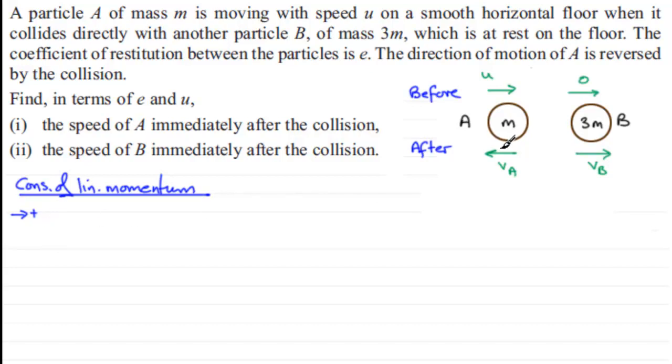So, what we've got is the momentum before impact. So, it's just going to be for A, m times u. So, we've got mu. There's no momentum initially for B. So, this is equal to the momentum after impact. So for A, we've got the mass m, multiplied by the velocity, which is going to be negative VA, because it's going in the opposite sense to this. So, we've got m times minus VA. And to this, we add the momentum of B. So, that's going to be the mass 3m, multiplied by VB. VB is in the positive sense. So, just 3m VB.